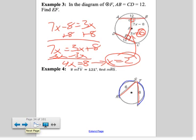So if the measure of TV is 121, then this other arc must also have a measure of 121 degrees.